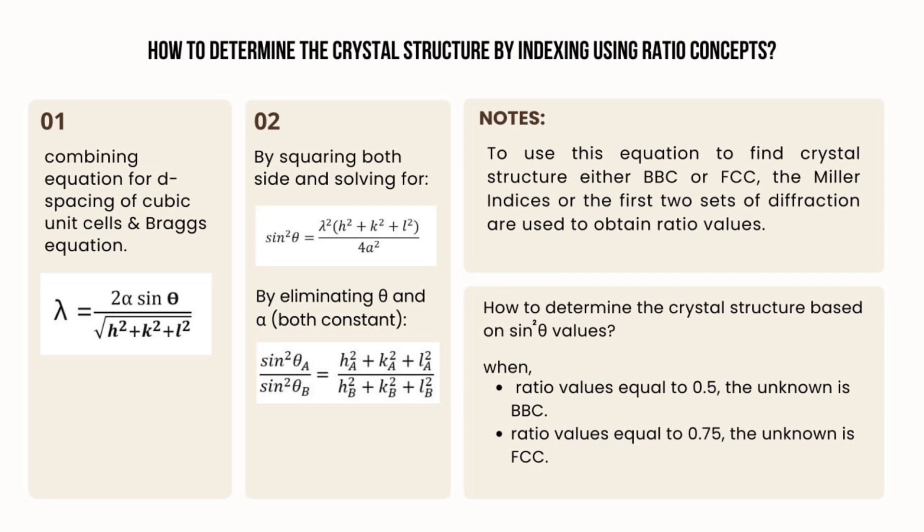To determine the crystal structure based on sin squared theta values: when the ratio values equal 0.5, the unknown is BCC, and when equals 0.75, the unknown is FCC.